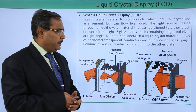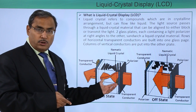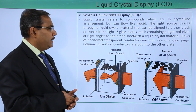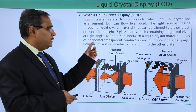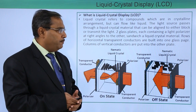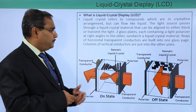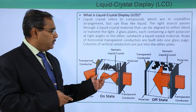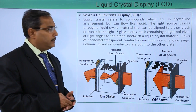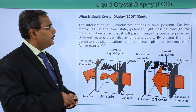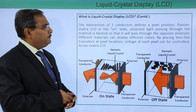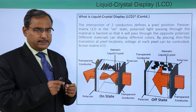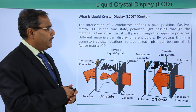These two glass plates sandwich a liquid crystal material. Rows of horizontal transparent conductors are built into one glass plate and columns of vertical conductors are put into the other plane — these two having different inclinations. The intersection of two conductors defines a pixel position, and depending upon the intersection, the pixel position will be decided.